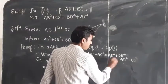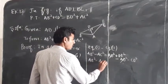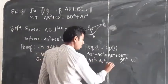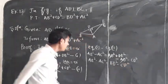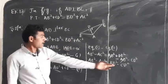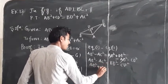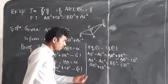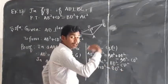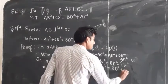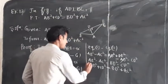The AD square terms cancel. So AB square minus AC square equals BD square minus CD square. Moving terms: AB square plus CD square equals BD square plus AC square. This is the required result.